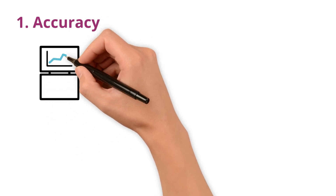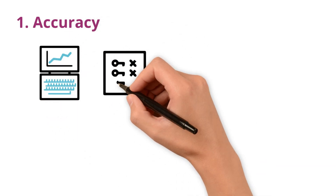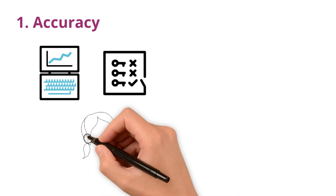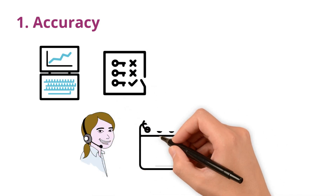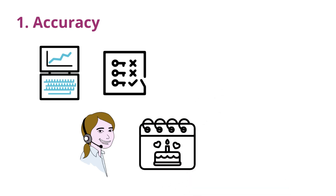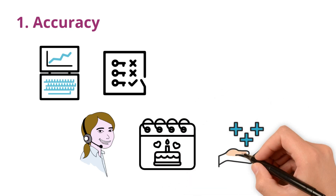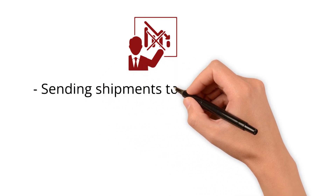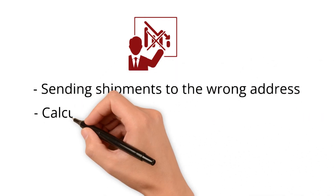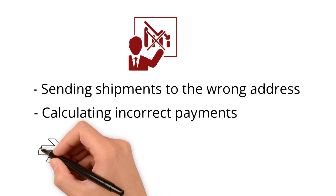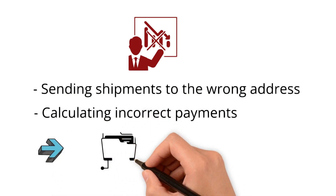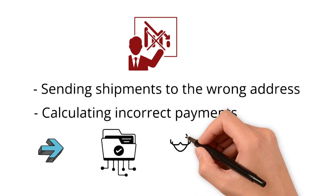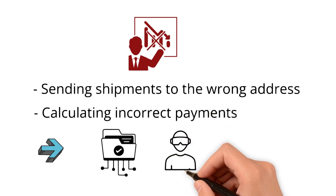Accuracy is all about making sure your data reflects real life facts — like having the right phone number to contact someone, or making sure birth dates are correct so people don't miss out on benefits. Accuracy is crucial because inaccurate data can lead to mistakes like sending shipments to the wrong address or calculating incorrect payments. So it's important to verify data against trusted sources to ensure it reflects reality as closely as possible.